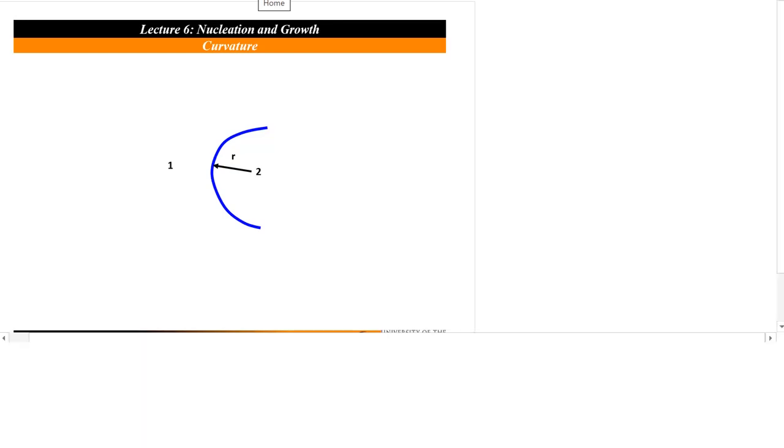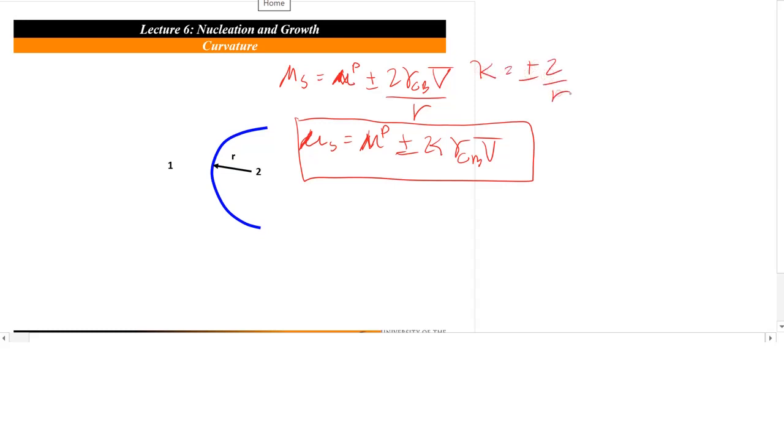The big recap and the two big equations I think we derived last time: the chemical potential of a sphere is equal to the chemical potential of an infinite plate plus or minus 2 times your grain boundary surface tension, your molar volume over R. Or you could rewrite this as chemical potential of a sphere, our chemical potential is directly proportional to curvature here.